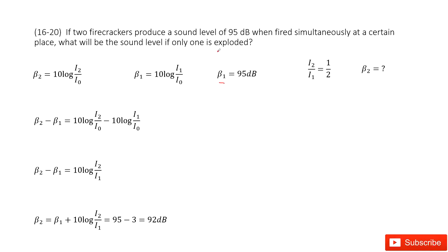If just one firecracker explodes, that means the intensity becomes half of the previous value. So we have I₂ over I₁ equal to one half. This is the ratio of intensity.